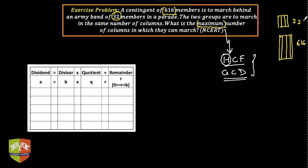Clearly, if you draw a representative diagram, you have one contingent here and another contingent here, and you have to divide them into the same number of columns, and each column has to have maximum number of people. This is nothing but finding the highest common factor of 32 and 616, because if we find the highest common factor, that will be the number of people in one group and you can find the number of groups as well.